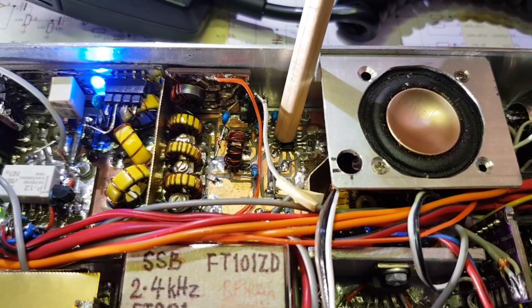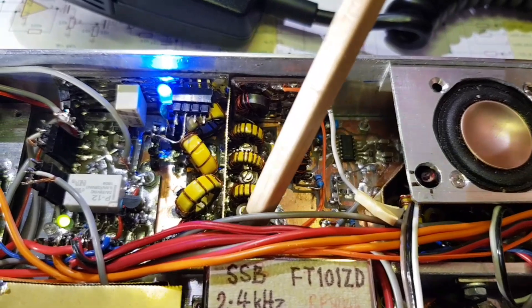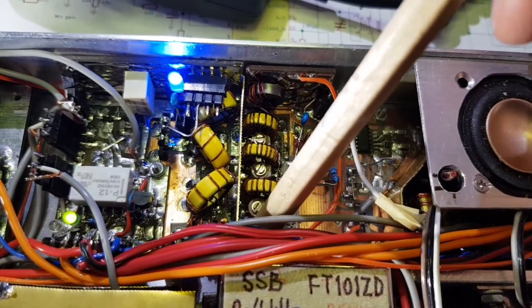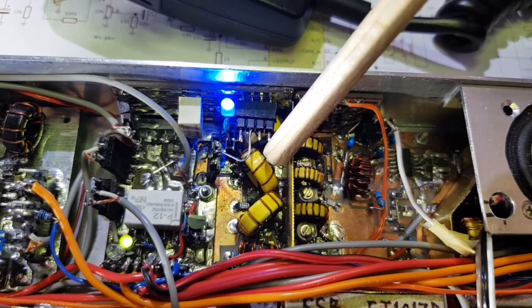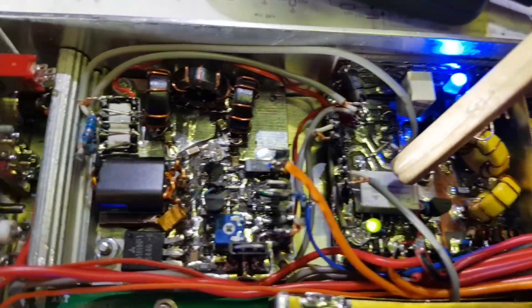This is the transmit mixer. Band pass filter to follow. The driver transistor is tucked in there. That's its low pass filter. And then this is switching for 28MHz or the transverter.